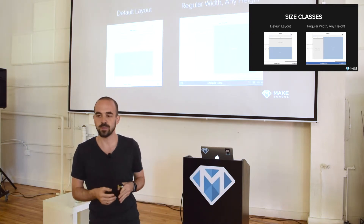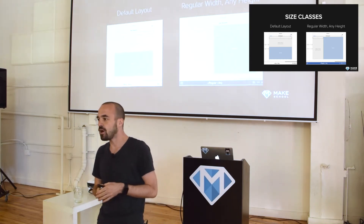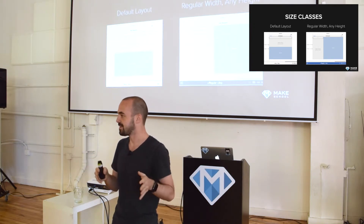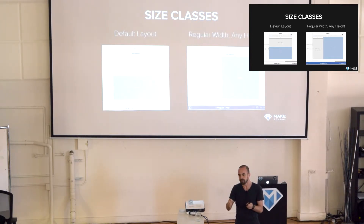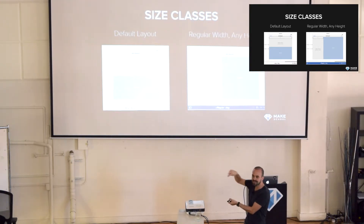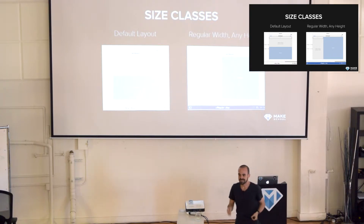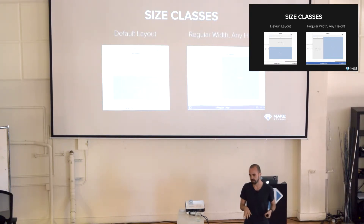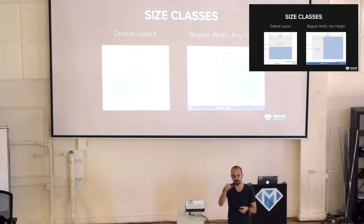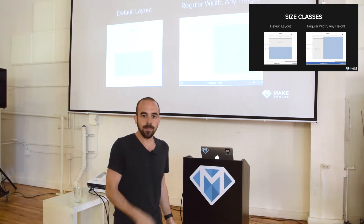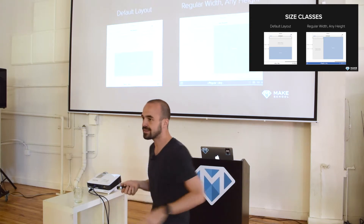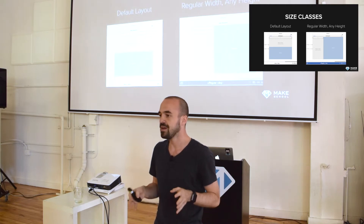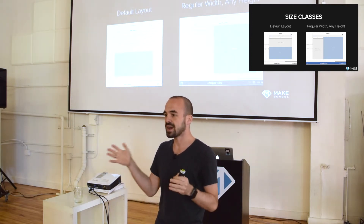Apple has the philosophy that you should not consider the device type, but you should actually consider the relative screen size of the device, because they want to be able to add different devices in the future. There are some use cases where a certain device type might change its size class. A very new example is on iPad — there's a new feature that allows for multitasking, where you can use two apps side by side. If you have an iPad in portrait mode and you use two apps side by side, then the size you have is very, very slim. The size class Apple uses there is basically the same one used for an iPhone, so the layout on both apps will look like on an iPhone so you can see them side by side and still use them.